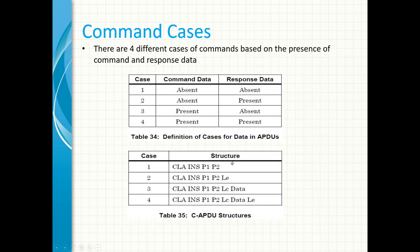There are four different command cases, which are characterized by the presence or absence of data in both the command and response pair. For Case 1, there is neither data in the command nor response, so only status bytes will be sent back by the IC card. In Case 2, there is no data provided to the IC card, but the card is expected to reply with data. Case 3, data is sent to the card, but the card is not expected to send data apart from the status bytes. Case 4, data are sent in both the command and response.